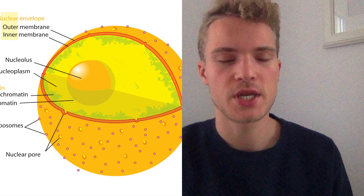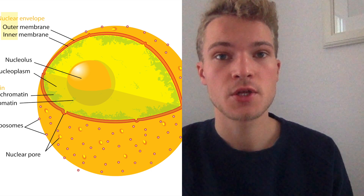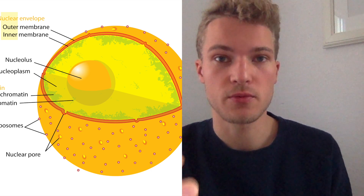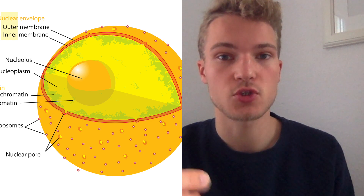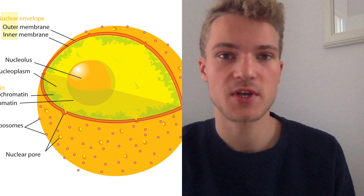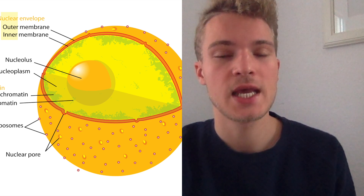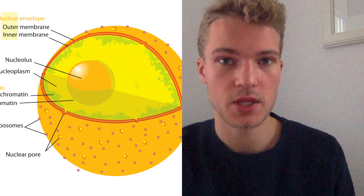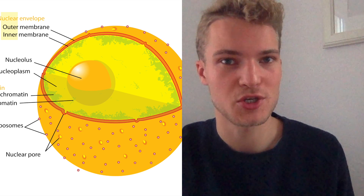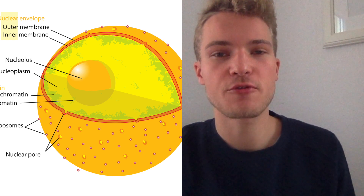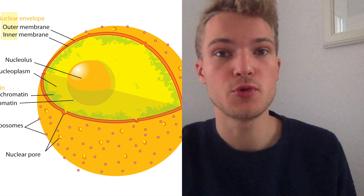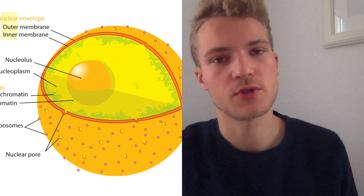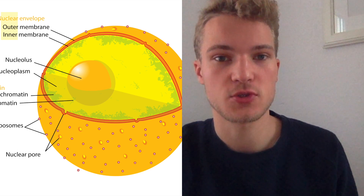Now let's look at organelles only present in eukaryotic cells — for instance, animal or plant cells, fungi, and certain protists like the amoeba. The first one, which we already named, is the nucleus. In eukaryotic cells, genetic information is stored in the form of chromosomes. The nucleus has a double membrane with pores so material can get in and out, and there's an inner region called the nucleolus where the genetic information is stored.